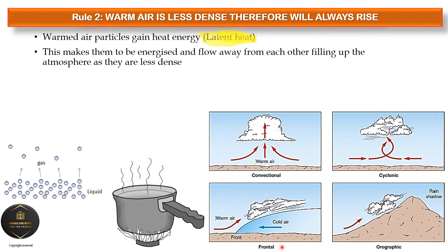Warm air may also form fronts, making it frontal in nature. When warm air meets cold air, it will always rise — it condenses and forms clouds, never mixing with cold air. In an orographic situation at a mountain, warm air will rise on the windward side, form clouds, and produce rainfall, while the leeward side becomes the rain shadow.